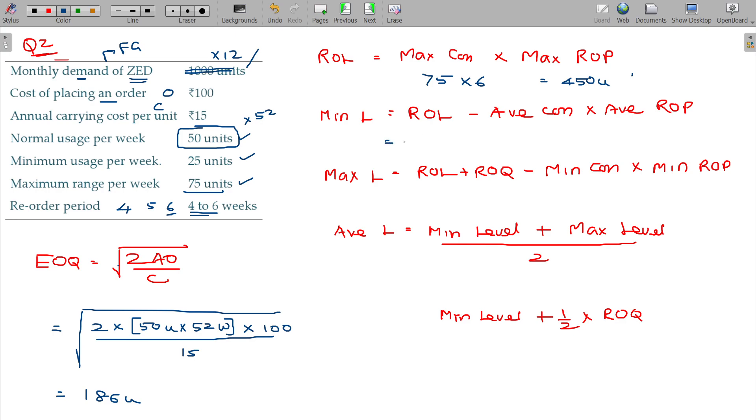And minimum level, reorder level minus average consumption 50. Average reorder period being 5. 250 will be subtracted. So 200 units.